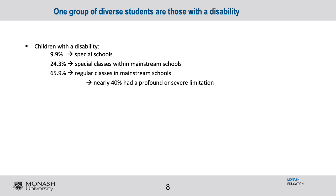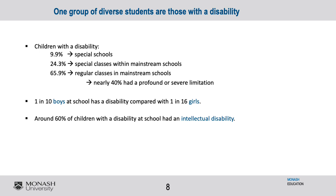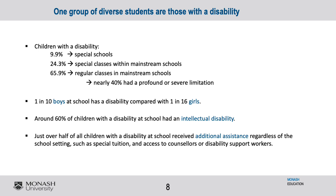I remember working with many aides when I was a teacher and having students who are often quite profoundly disabled in the classroom with me. What did I have to do to work with that student to make their learning enjoyable and engaging, to make it meaningful for them, and to also work with their aide? Mainstreaming of students with disability has become the practice. 1 in 10 boys in school have a disability compared to 1 in 16 girls. 60% of children with disability at school had an intellectual disability. Finding ways of communicating and articulating tasks that are understandable and accessible for students with an intellectual disability is part of the challenge of your role. Just over half of children with a disability at school receive additional assistance — special tuition, access to counsellors, a disability support worker, or an aide in the room.